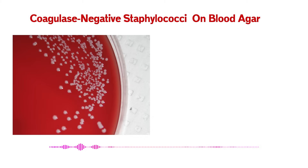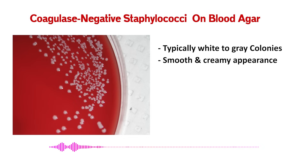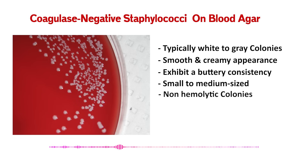What's the classic CoNS look on SBA? The general appearance is usually pretty consistent for most CoNS. You're looking for white to gray colonies, and they tend to have a really smooth, creamy look — almost buttery if you were to touch them with a loop. In size, typically small to medium. And critically, they're mostly non-hemolytic — no clearing around the colony. That non-hemolytic feature is the standard rule for CoNS on SBA.